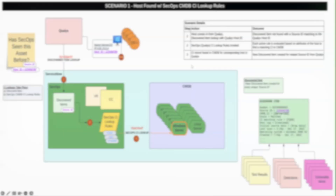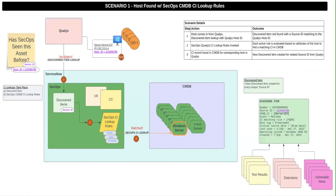Thanks, Andy. In scenario one, I will be going over when a host brought in from a third-party scanner is successfully matched to a CI in the CMDB using the SecOps CMDB CI lookup rules. Step one involves a discovered item lookup, which is used to help us determine whether SecOps has seen this asset before. The lookup tries to find an existing discovered item with a source ID matching the host ID provided by the scanner. In this scenario, a match was not found because this is the first time we are ingesting this new asset.